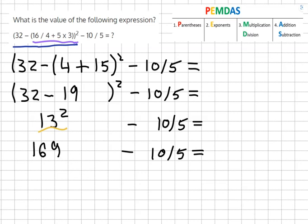10 over 5 equals 2, and then we add in what we already know. Our final answer is 169 minus 2 equals 167.